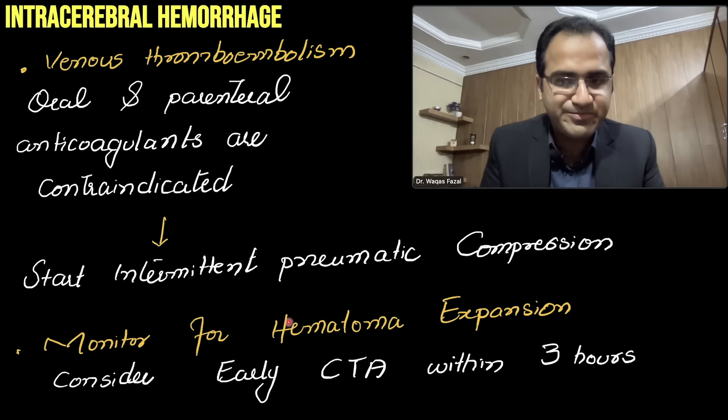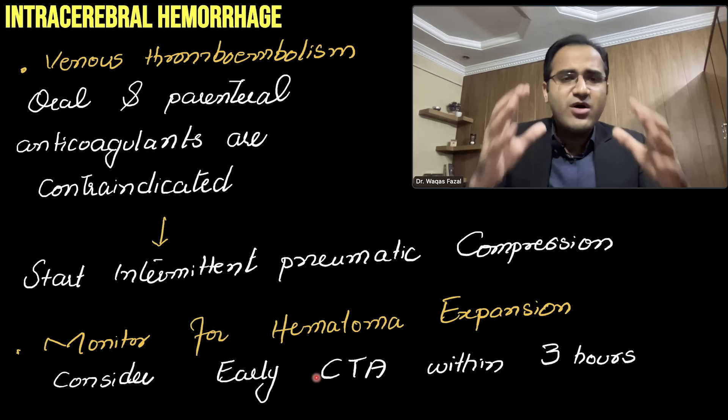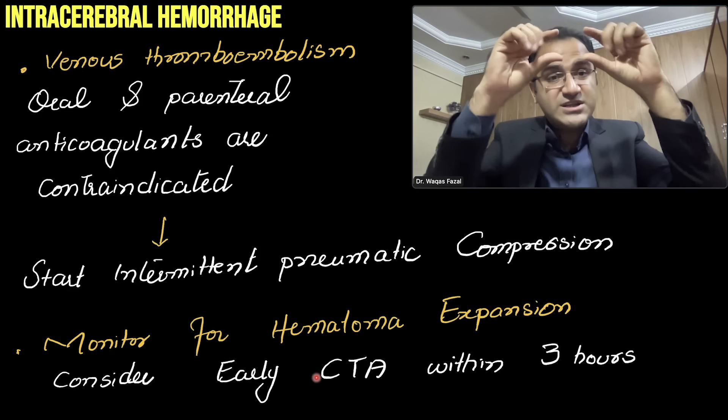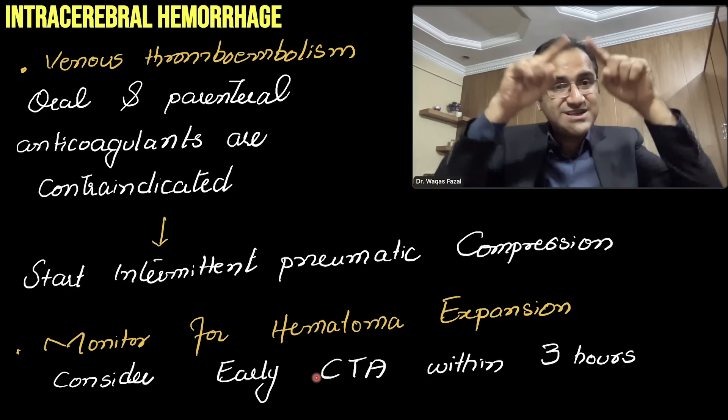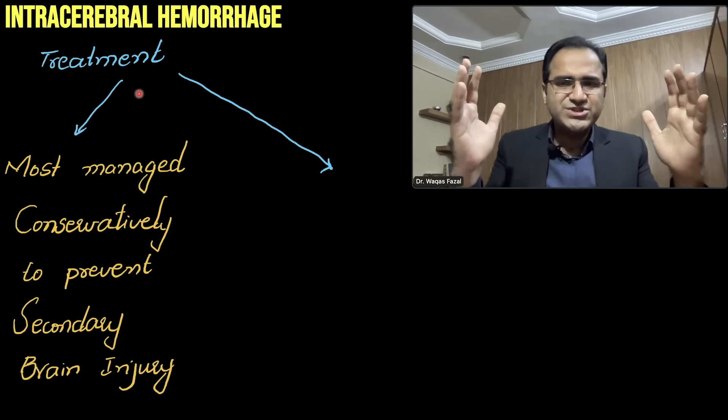Monitor for hematoma expansion and consider early CT angiography. CTA is an investigation that examines vessel structure — it can show whether an aneurysm is present. Most patients with intracerebral hemorrhage are managed conservatively to prevent secondary brain injury.